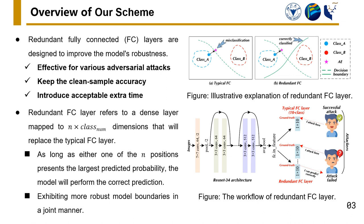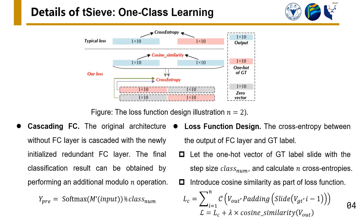N redundant FC layers will replace the typical FC layer. As long as either one of the N positions presents the largest predicted probability, the model will perform the correct prediction. As the figure shows, the redundant FC layers exhibit more robust model boundaries in a joint manner. Specifically, the final classification result can be obtained by performing an additional modulo and operation.